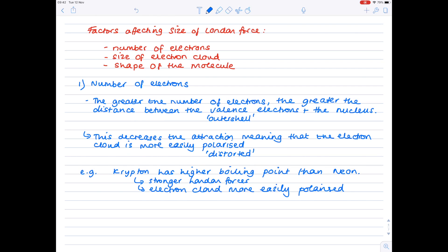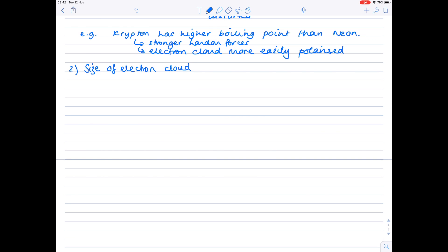Next up, the effect that the size of the electron cloud has on the size of the London force. So, in a large electron cloud, the attraction of the electrons to the nucleus is obviously less. The electron cloud is therefore more easily polarized.